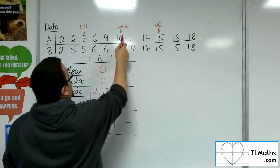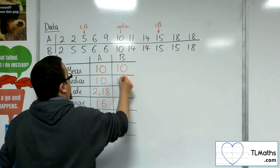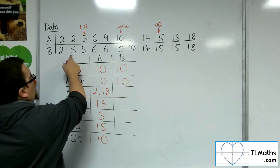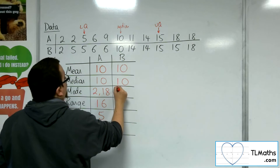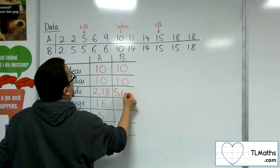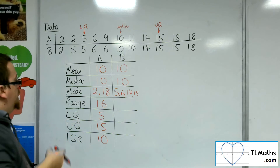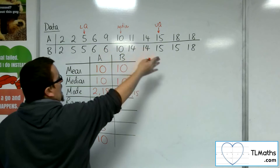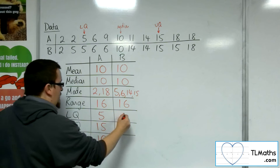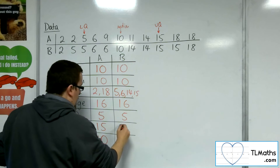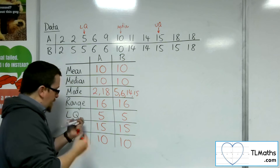The median value will be in the same position — it's got the same number of data items — so that's 10 again. The mode: well, we've got two 5s, two 6s, two 14s, and two 15s, so 5, 6, 14, and 15 all appear twice. The range is 18 take away 2, so 16 again. The lower quartile is in the same position, so that's 5. The upper quartile is in the same position, so that's 15. So the interquartile range is the same.